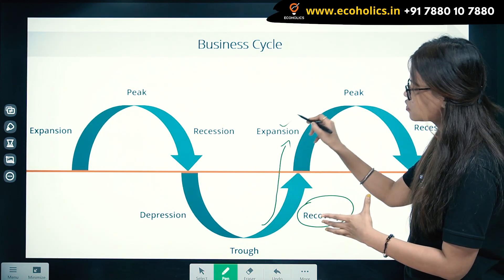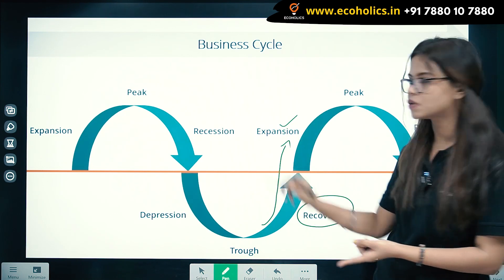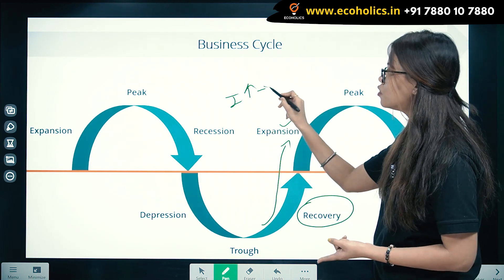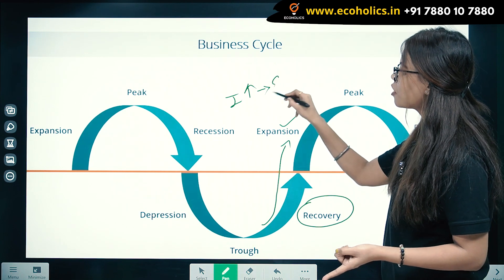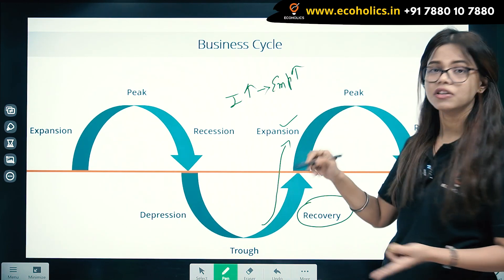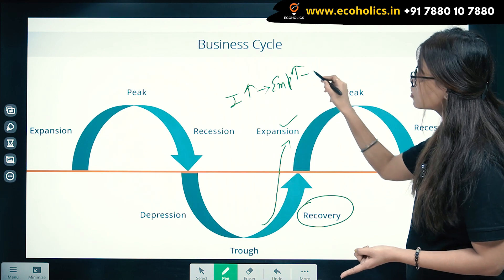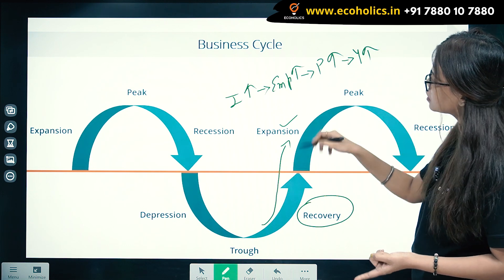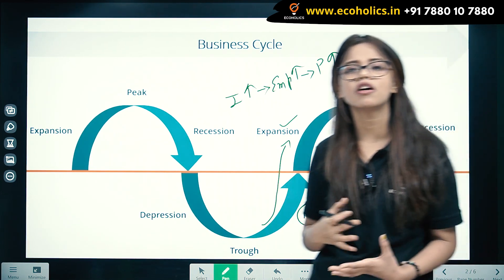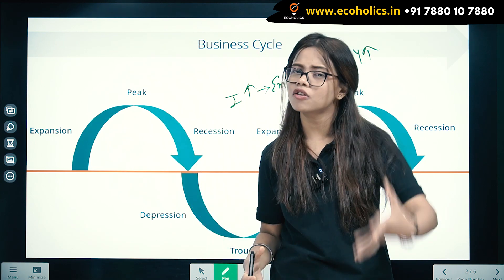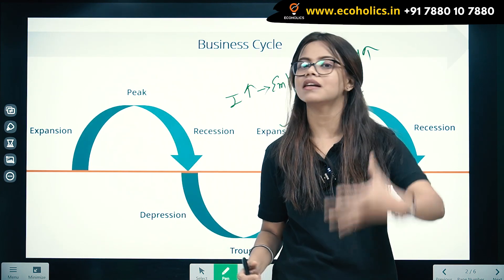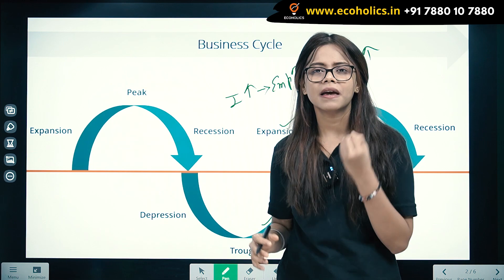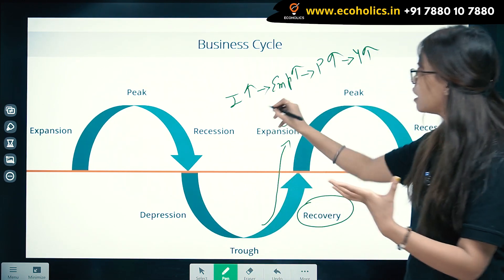As we slowly move into the expansionary phase, investments are high. Because investments are high, you want people to work for you, so employment is high. With high employment, production activity and output are high, and income is high. Our economy is booming — we have attracted a lot of investments, banks are extending their credit facilities, and everything is rising.